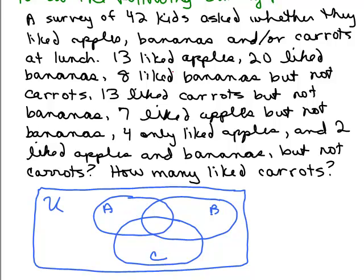Same thing with bananas — can't do that yet. Eight liked bananas but not carrots: those are two pieces and they have to add up to eight, but I can't do anything yet since two regions together have to add up to eight. Thirteen liked carrots but not bananas — same problem, two pieces. Seven liked apples but not bananas — same problem, two regions. But then: four only liked apples! That little piece — the people only in the apple group, not part of banana or carrot — I can place that 4 right in the diagram. I'll circle that to remember I've used it.